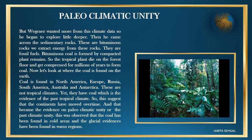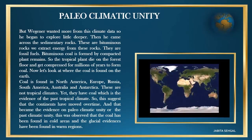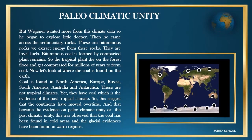Coal is found in North America, Europe, Russia, South America, Australia, and Antarctica — these are not tropical climates, yet they have coal, which is evidence of a past tropical climate. This suggests that the continents have moved over time, and that became the evidence for paleoclimatic unity. It was observed that coal has been found in cold areas and glacial evidence has been found in warm regions.